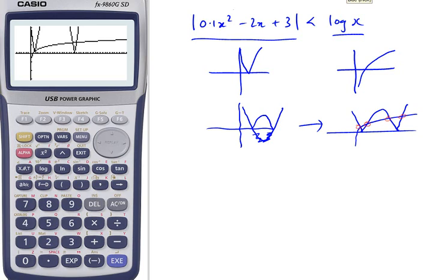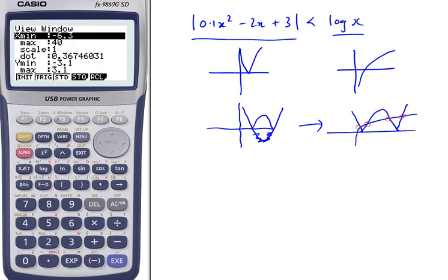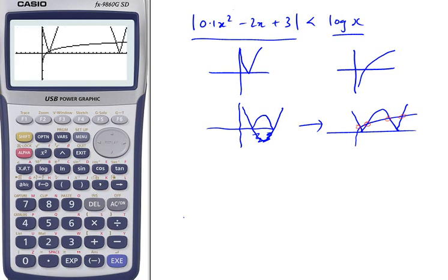It looks as if the graph doesn't have to go up to 40. I'll go back to the window and change that to 20. We'll draw it again, and clearly we can locate our values here.